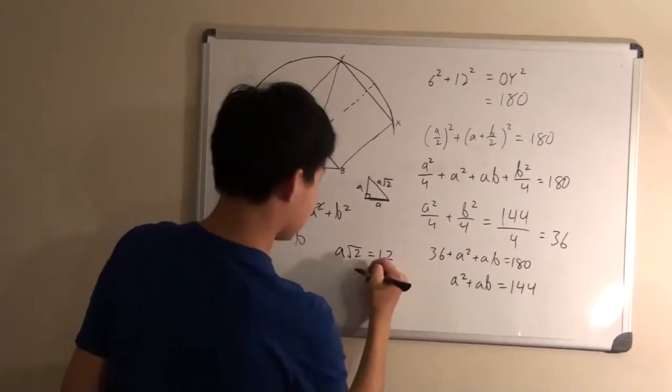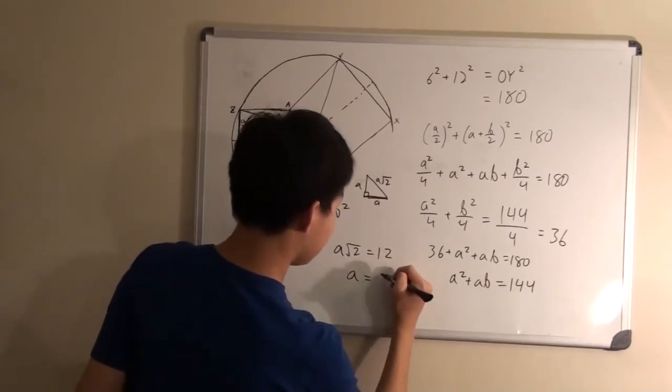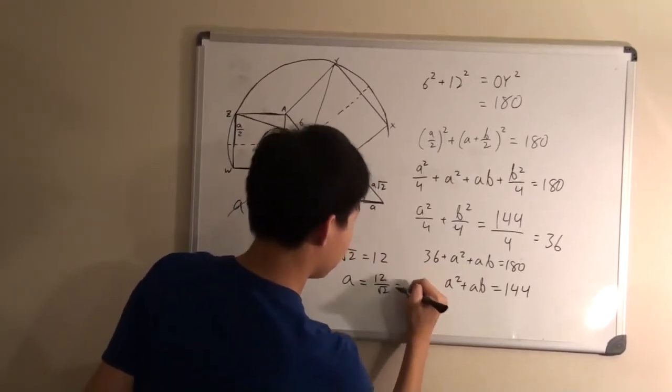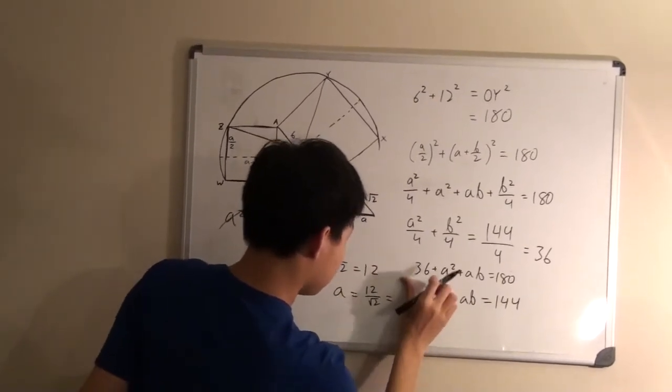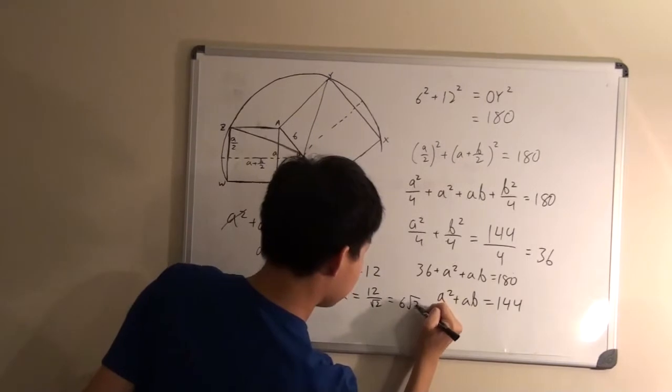That means one of its legs would be 12 over root 2, which is also equal to 6 root 2.